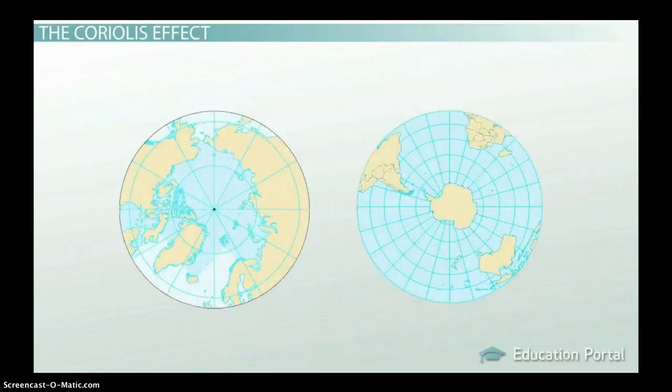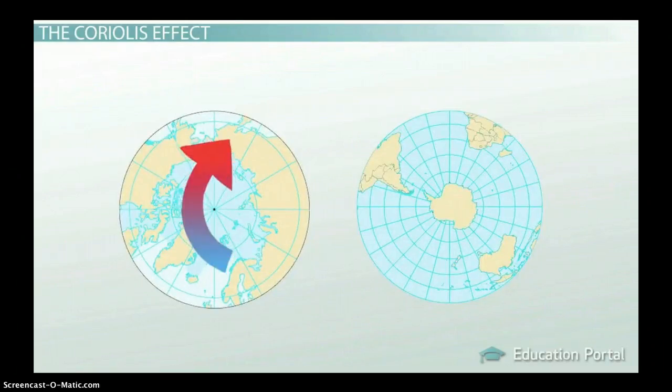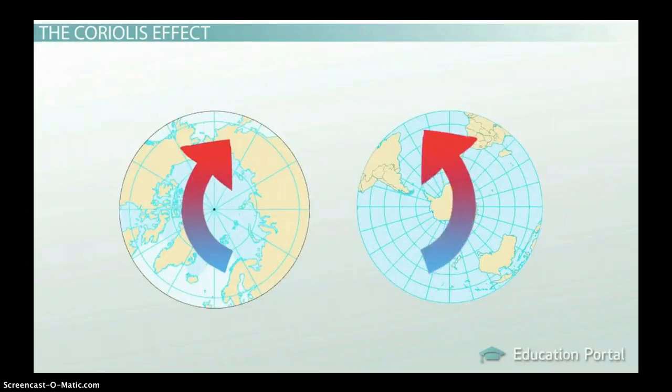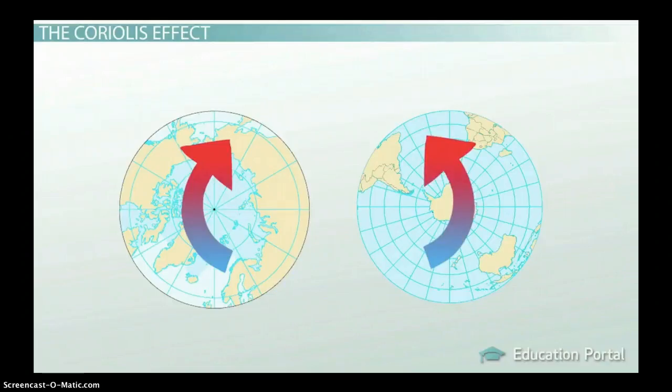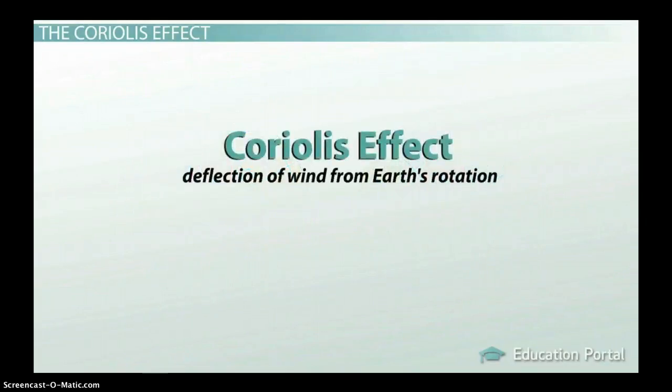What's especially interesting is that this rotation of Earth affects the path of wind so that it appears to deflect to the right in the Northern Hemisphere and the left in the Southern Hemisphere if you're looking down from one of the poles. This deflection of wind from Earth's rotation is called the Coriolis Effect.